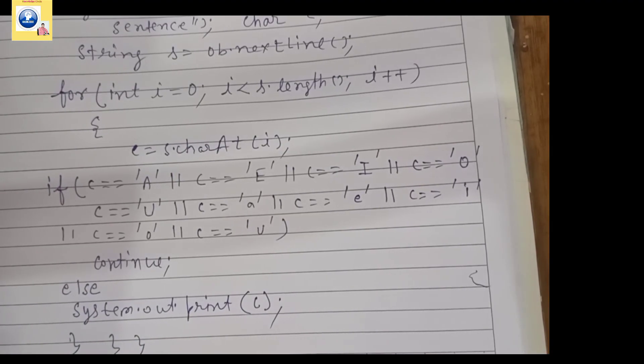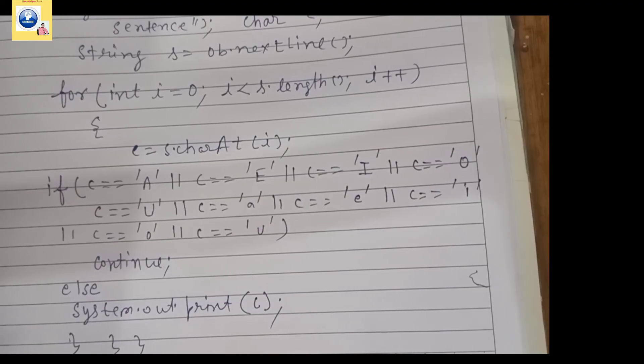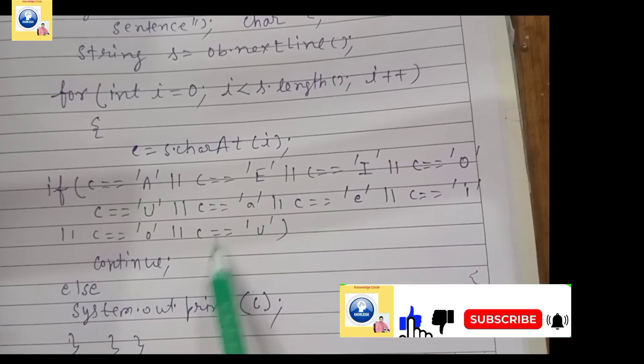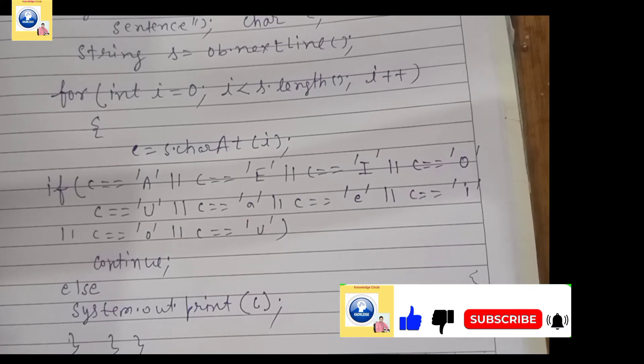This is how we do it. If any vowel will be found, that will be skipped. If it is not vowel, if this condition is not true, then the character will be printed. So this is how we can simply remove the vowel from a string.